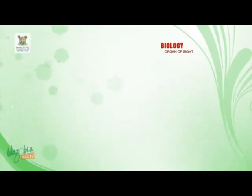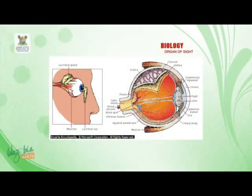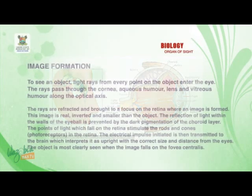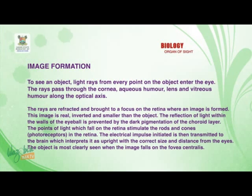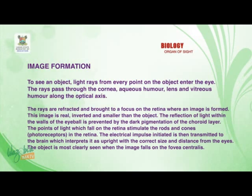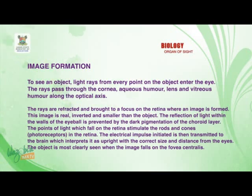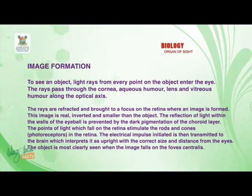Now let's look at image formation. To see an object, light rays travel from every point on the object and enter the eye. The rays pass through the cornea, aqueous humor, lens, and vitreous humor along the optical axis. The rays are refracted and brought to a focus on the retina where an image is formed. This image is real, inverted, and smaller than the object. Reflection of light within the walls of the eyeball is prevented by the dark pigmentation of the choroid layer.